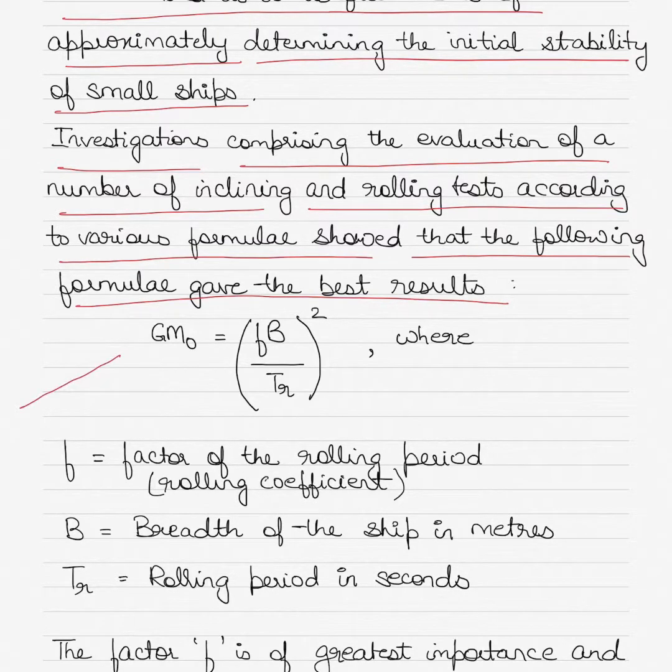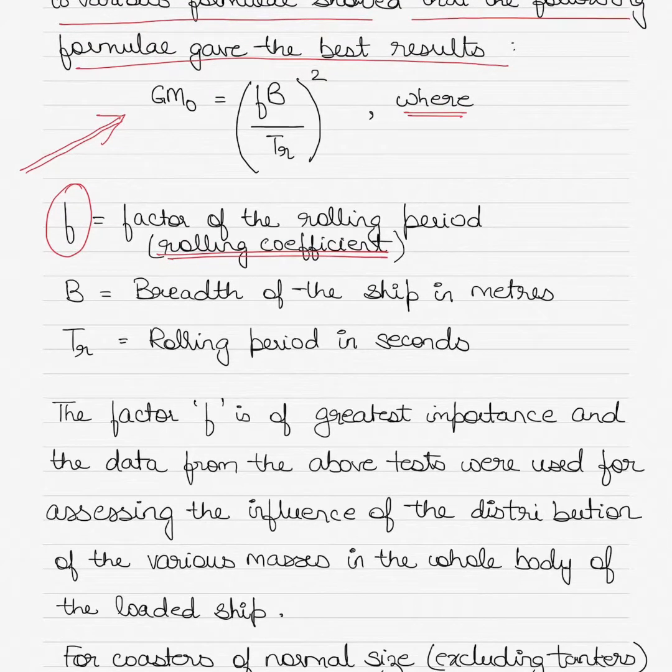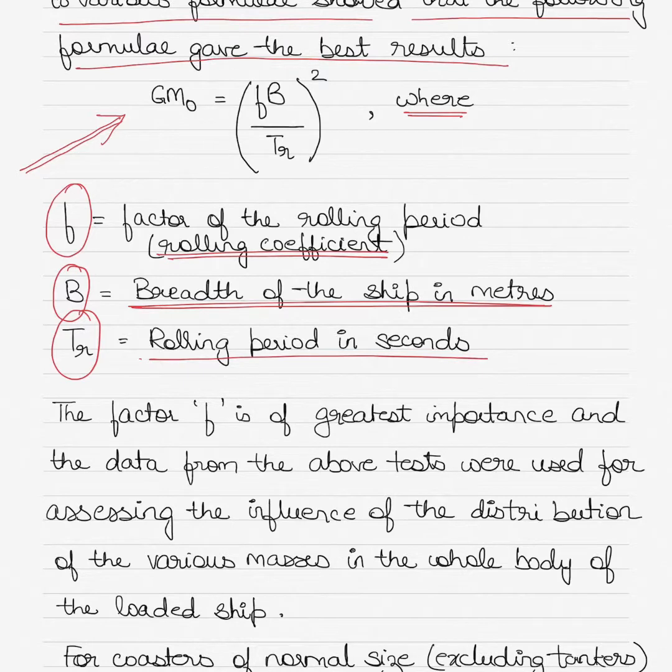The formula is GM0 equals F times B divided by TR, and the whole thing is squared, where F stands for the factor of the rolling period or rolling coefficient. Then we have B which stands for the breadth of the ship in meters. We have TR which stands for the rolling period in seconds. This can be calculated using a stopwatch.